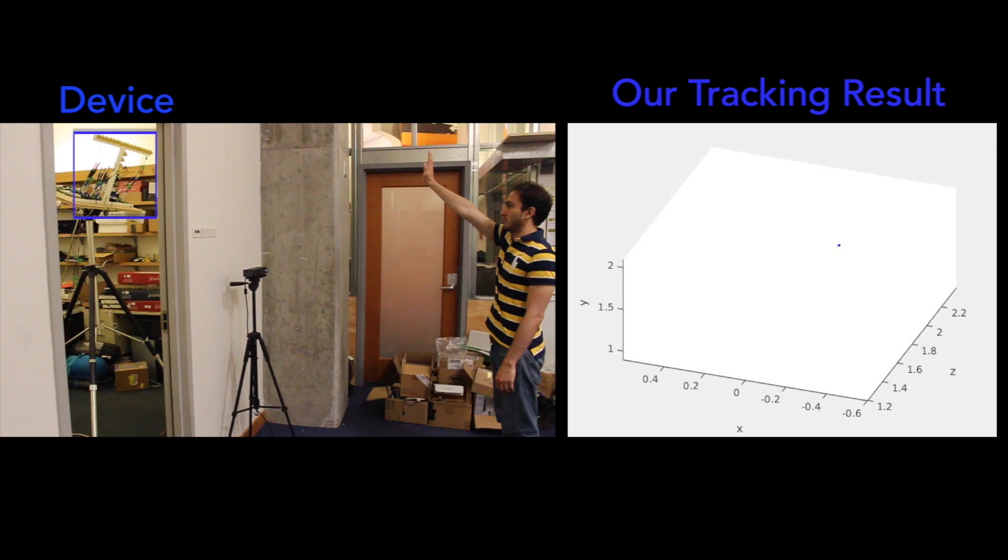The device can also track human limbs from behind the wall. Here, we show a scenario where a person draws a shape in the air and we show the output of our device to the right. The device can trace the person's hand with high accuracy.